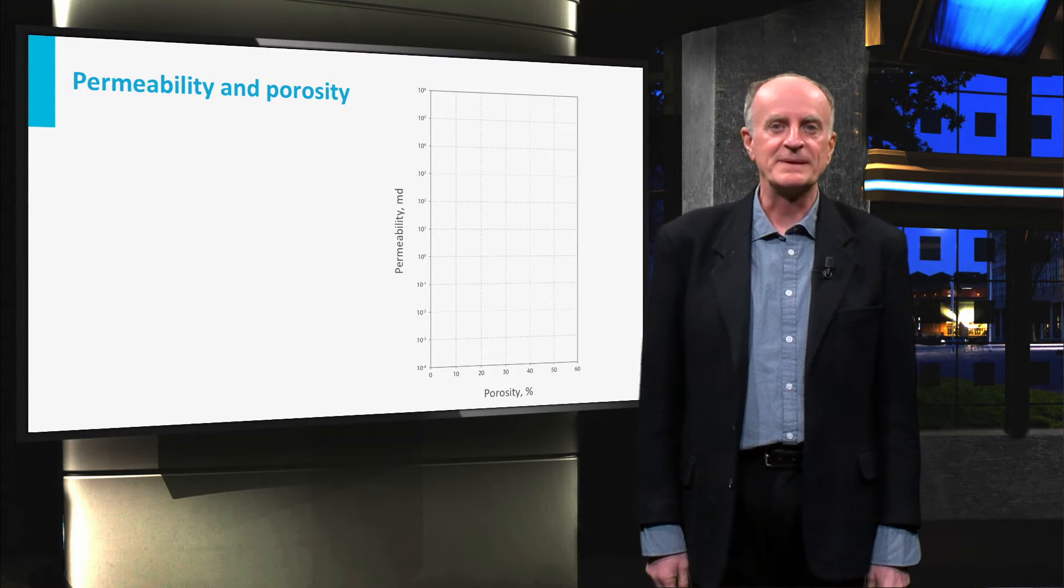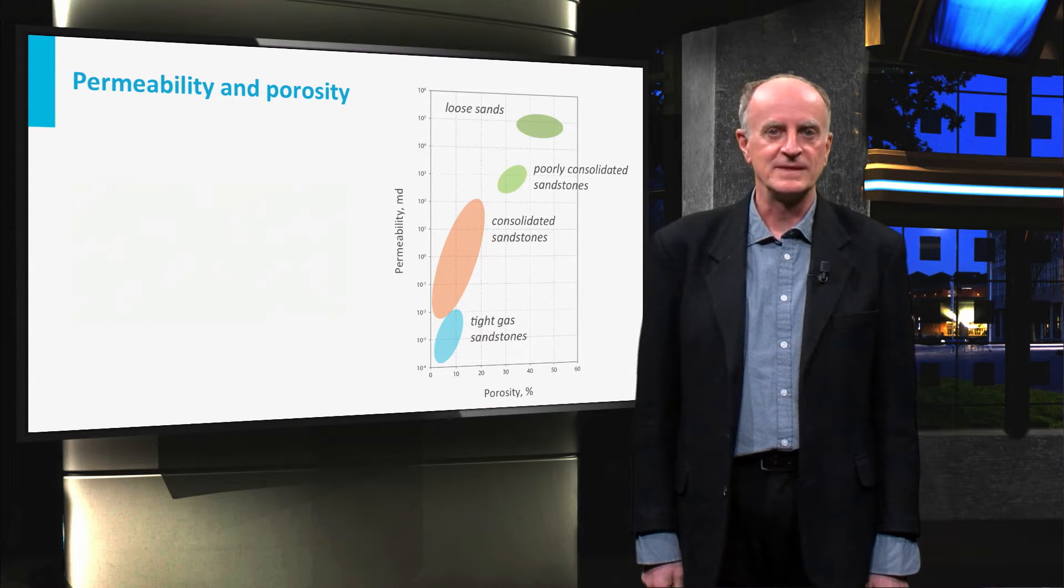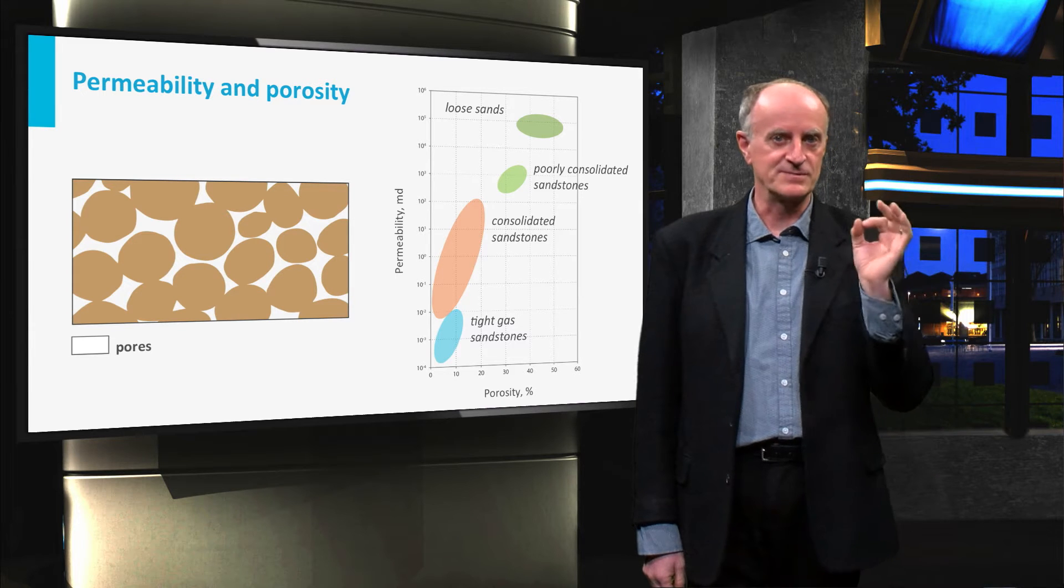As you can see in the plot, permeability is directly related to the effective porosity of a rock. The porosity of a rock is the empty space between the grains.